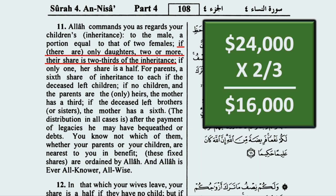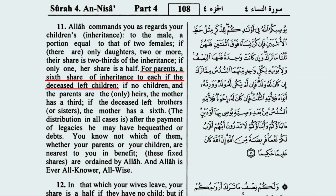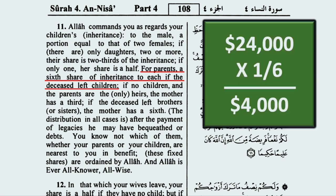How much goes to the parents? Allah, the all-wise, tells us: for parents, a sixth share of inheritance to each if the deceased left children. The deceased did leave children — three daughters — so each parent gets a sixth of the inheritance. One-sixth of $24,000 is $4,000. So the mother gets her sixth, $4,000, and the father gets his sixth, $4,000. So far, so good.